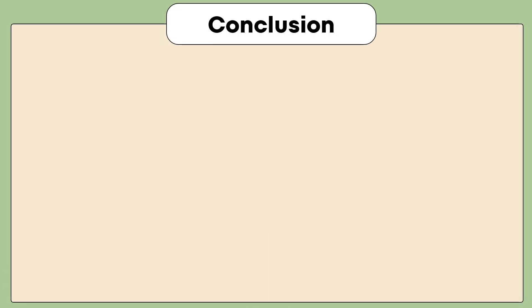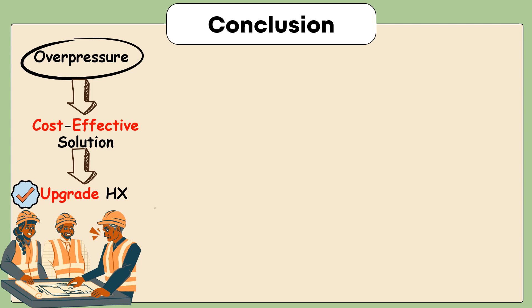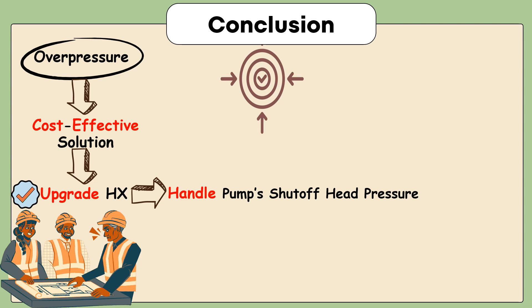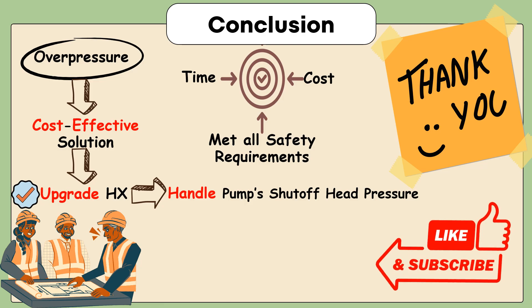The engineering team addressed an overpressure risk through a cost-effective solution that involved upgrading the heat exchanger to handle the pump's shut-off head pressure. This solution maintained the project timeline and ensured that the discharge system met all safety requirements without the need for additional overpressure protection measures.